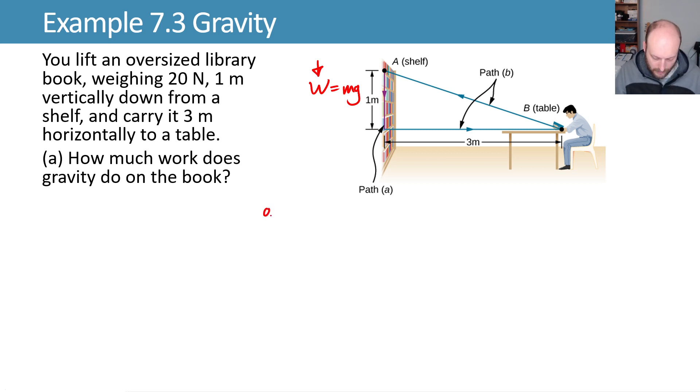The work done by gravity is going to be the work from A to C plus the work done by gravity moving it from that point C to our final point B.